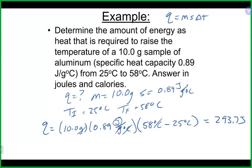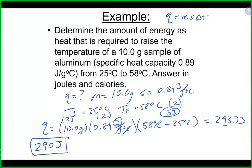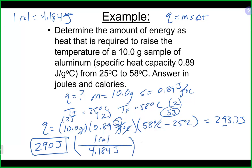Thinking about significant figures: when we do the subtraction we get 33, which is two significant figures; the other values have two and three sig figs, so the answer should end at two significant figures — about 290 joules. To convert to calories, one calorie is 4.184 joules, so dividing 293.7 by 4.184 gives about 69 calories. Q is positive here, meaning endothermic, which makes sense since the temperature increased — it gained energy.